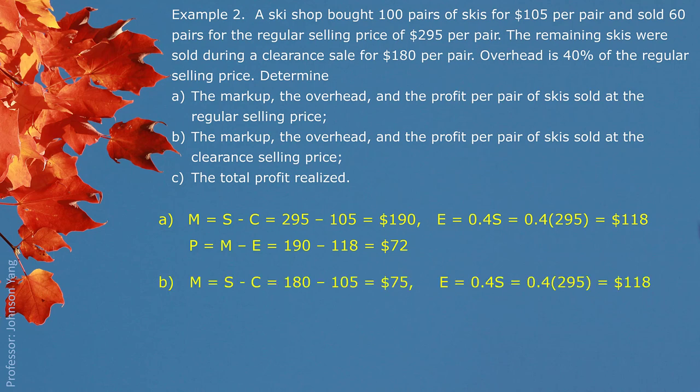Part B: Find out markup, overhead and profit per pair if the skis being sold at clearance sale. So clearance sale price is $180. From $180 compared to $105 cost of buying, we have $75 markup.